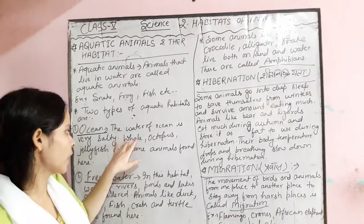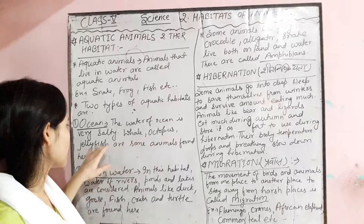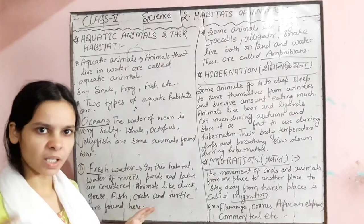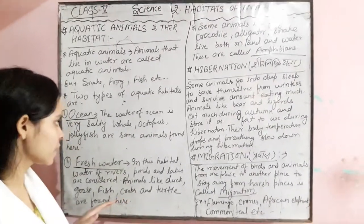The animals that survive in the ocean include blue whale, octopus, jellyfish, sharks, sea horse, etc.